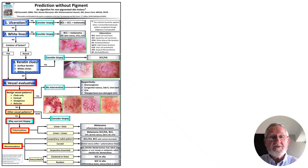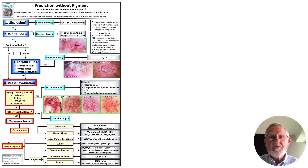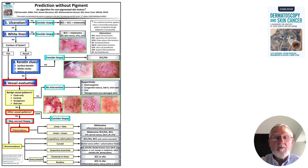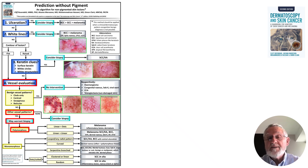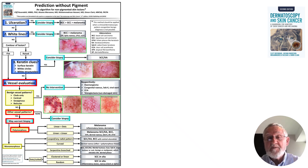When you have a lesion which is not ulcerated, has no white lines, is not an elevated lesion with keratin clues, and does not have one of the benign vessel patterns — but does have a vessel pattern — then you must decide whether that pattern is polymorphous or monomorphous. For polymorphous patterns there are two options: linear plus dots, and linear plus linear. For more details about vessels in lesions and how to decide if a lesion has a polymorphous pattern, I refer you to the book Dermatoscopy and Skin Cancer.